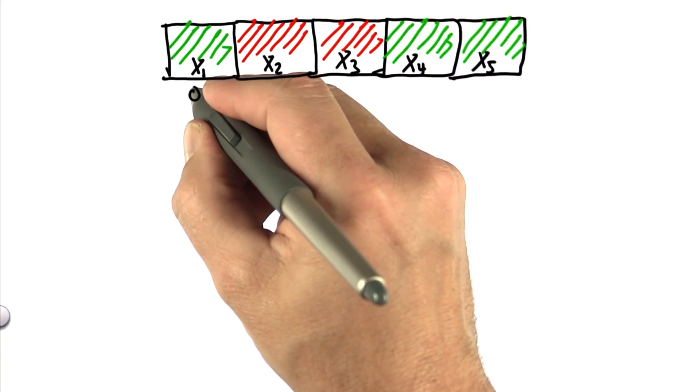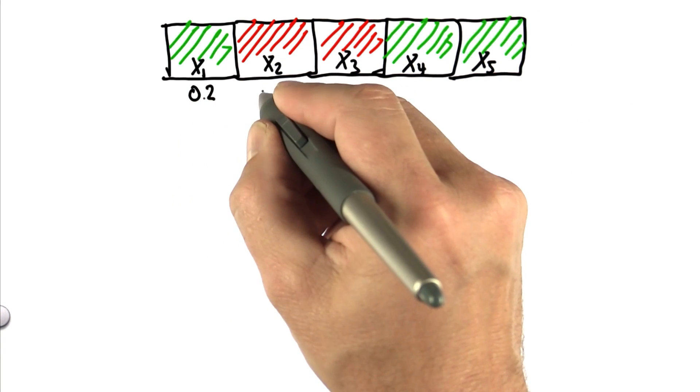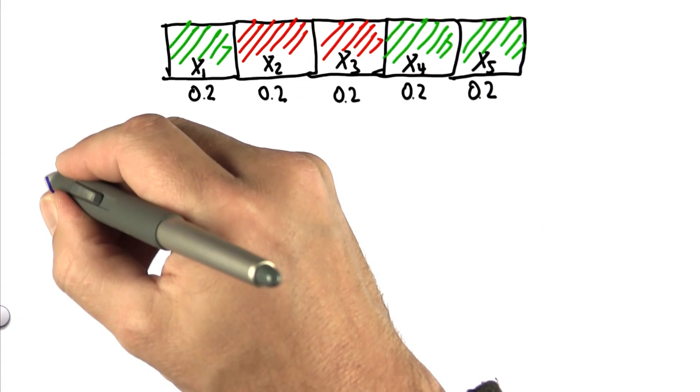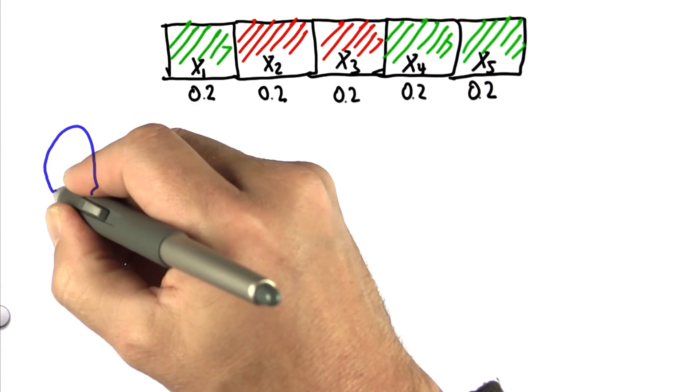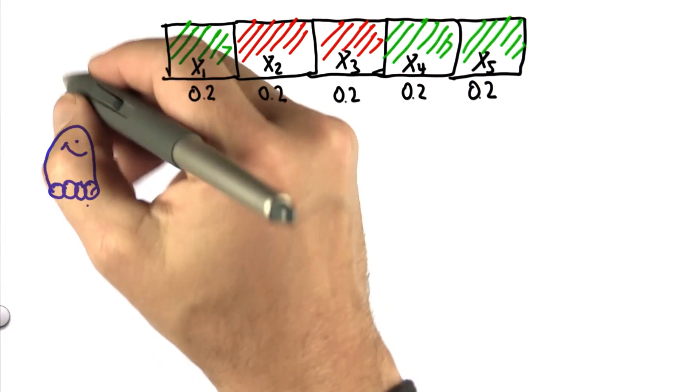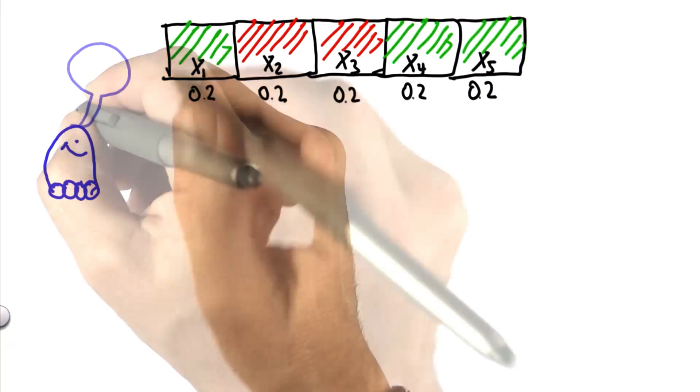As before, we assign uniform probability to each cell of 0.2, and our robot is now allowed to sense, and what it sees is a red color.